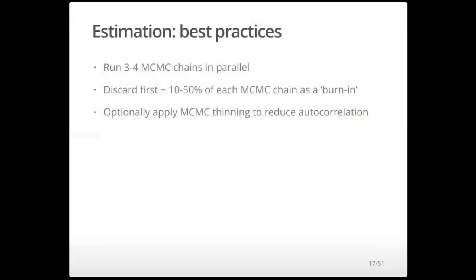Like maximum likelihood, MCMC methods can get stuck in local minima or maxima. Sometimes we have to start estimation from several different starting values. It's often best to run three or four MCMC chains in parallel starting from different starting values — ideally they'll all wander to the same solution. For each chain, they may all start from lousy starting values, so we do what's called a burn-in where we'll sample say a thousand values and throw out the first half as our warmup period.